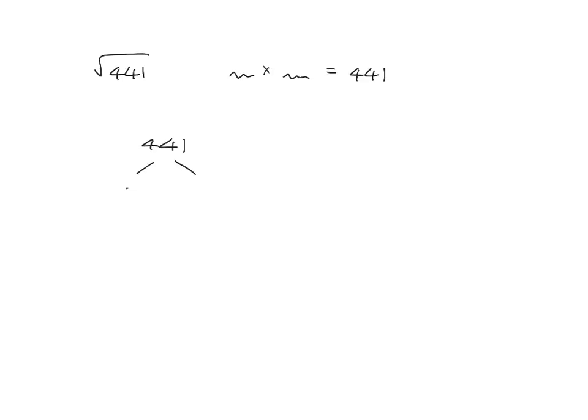Okay, 3 divides into 441. 3 goes into 4 once, remainder 1. 3 goes into 14 four times, remainder 2. And 3 goes into 21 seven times. 147, 3 can actually also divide into that. 3 goes into 14 four times, remainder 2, and into 27 nine times. 49 can still be split, and we know 49 is 7 multiplied by 7. So now we can easily see that 441 is equal to 3 times 3 times 7 times 7.